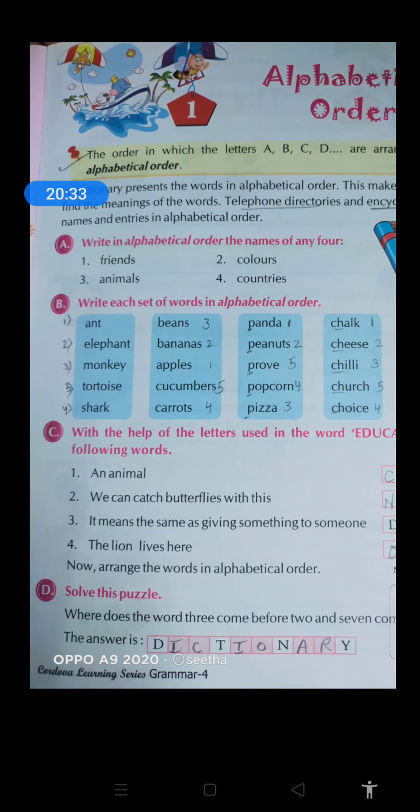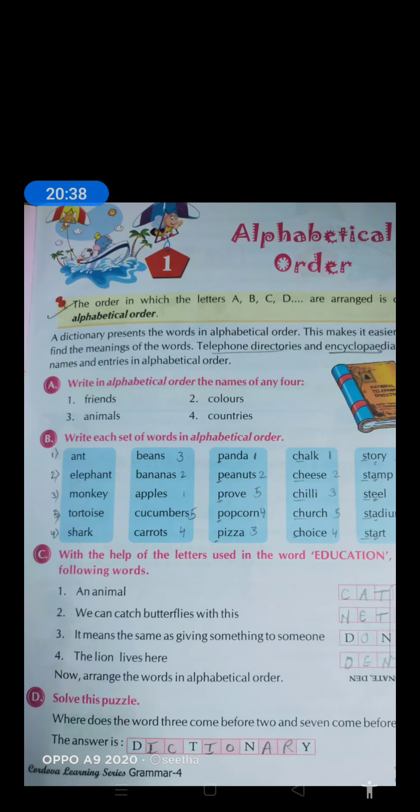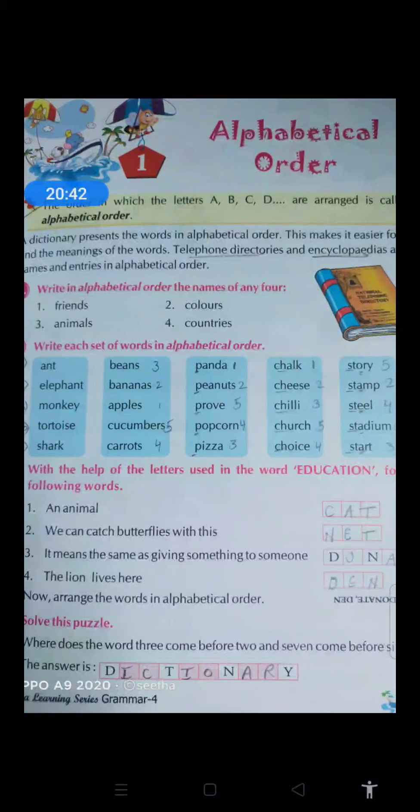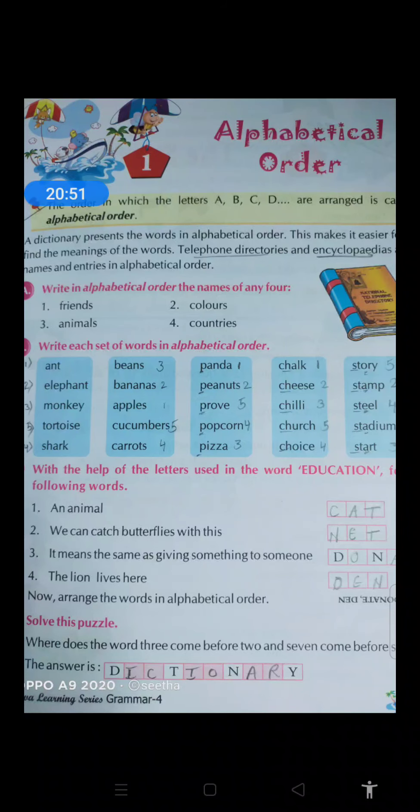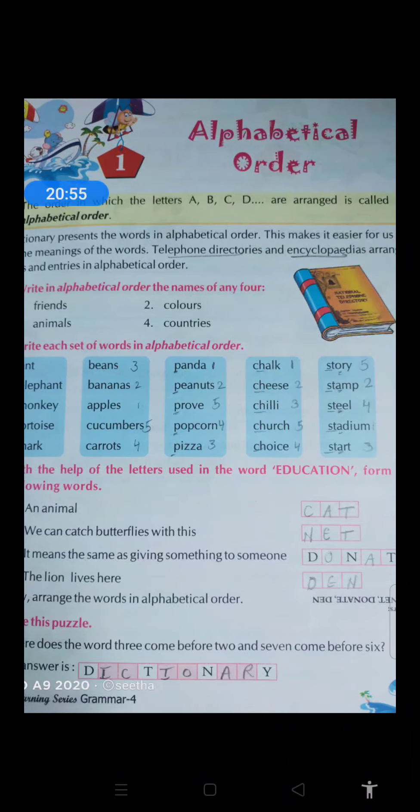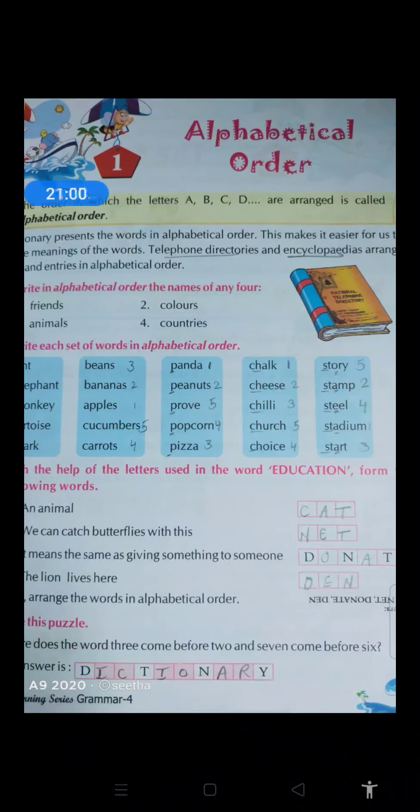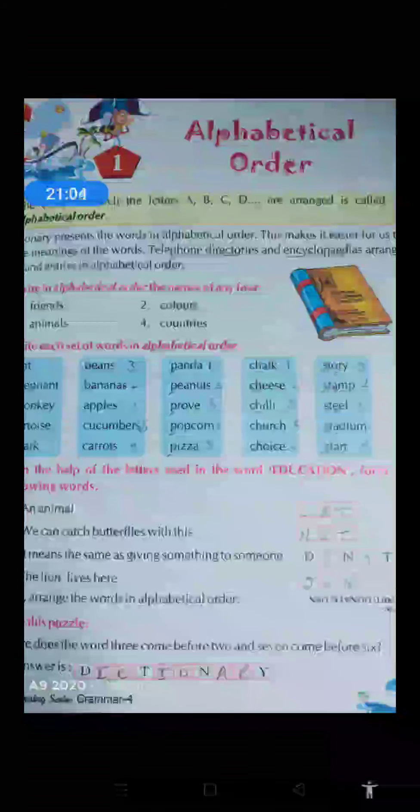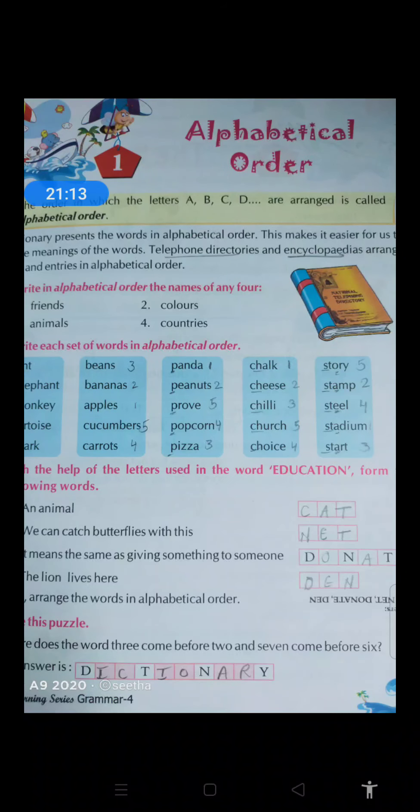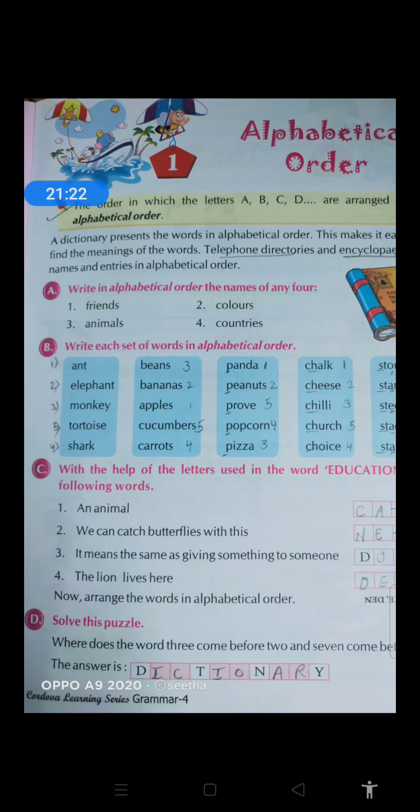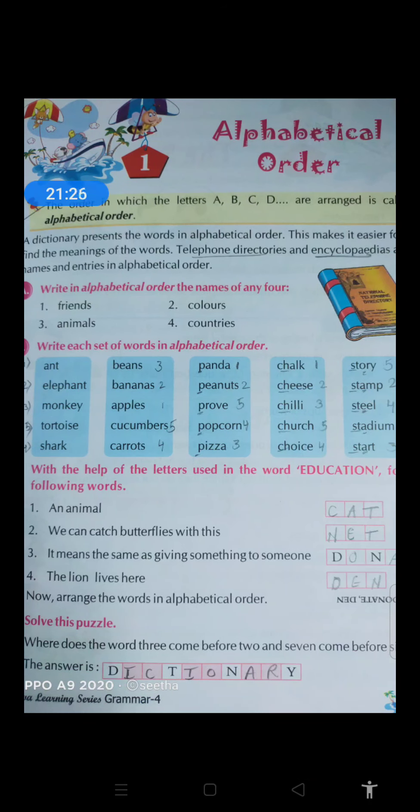Now the last exercise, that is exercise D. Solve this puzzle. A small puzzle is given for you. We have to find out the answer for this puzzle: where does the word 3 come before 2 and 7 come before 6? So where does 3 come before 2 and 7 come before 6? If you think in maths, it's highly impossible. 2 always, 3 will always come after 2. But here 3 comes before 2, and 7 is coming before 6. But there is one place where does the word...